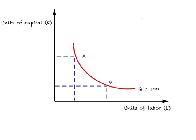Let us briefly revisit isoquants and then we'll move on to the cost side. Based on the properties we know, an isoquant will be convex to the origin, and this particular isoquant is strictly convex to the origin. This is based on the fact that there are different technologies available, and these different technologies permit us to use different combinations of labor and capital.